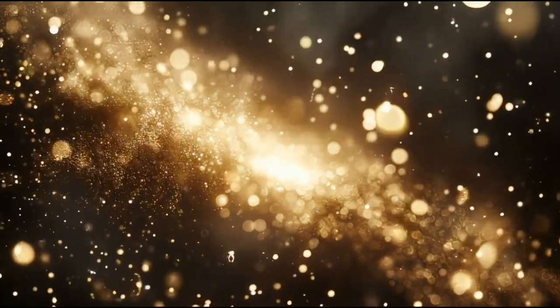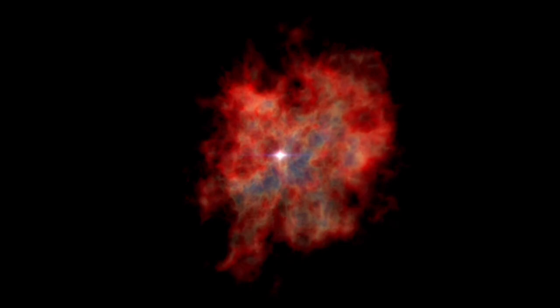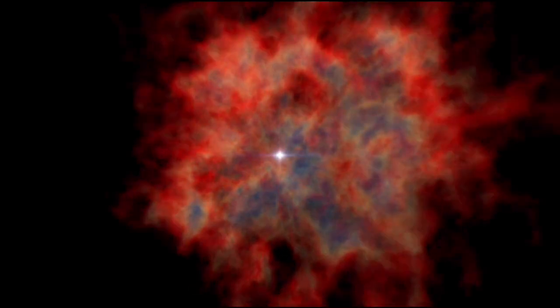Polaris is a moderately bright yellow-white supergiant star that can be found in the constellation Ursa Minor or the Little Dipper. It is much larger and brighter than our sun.